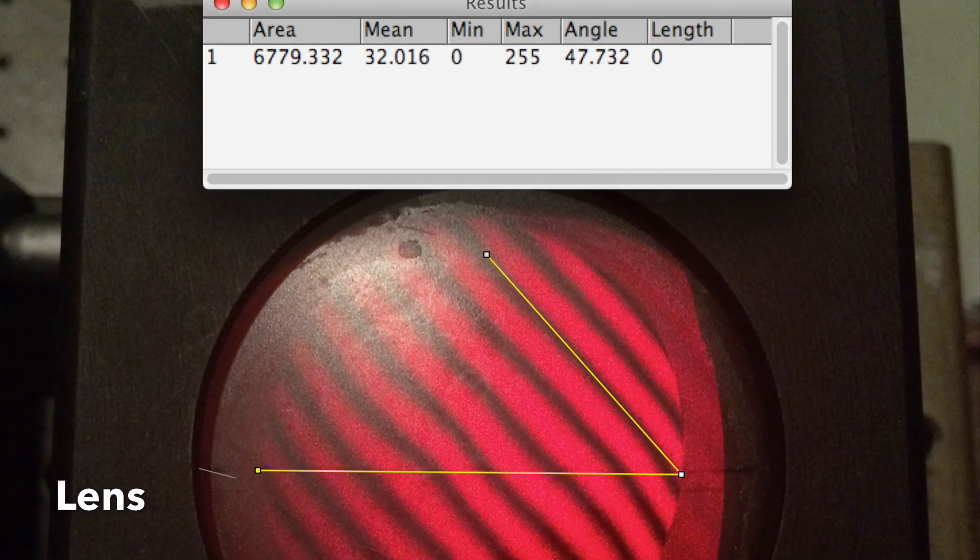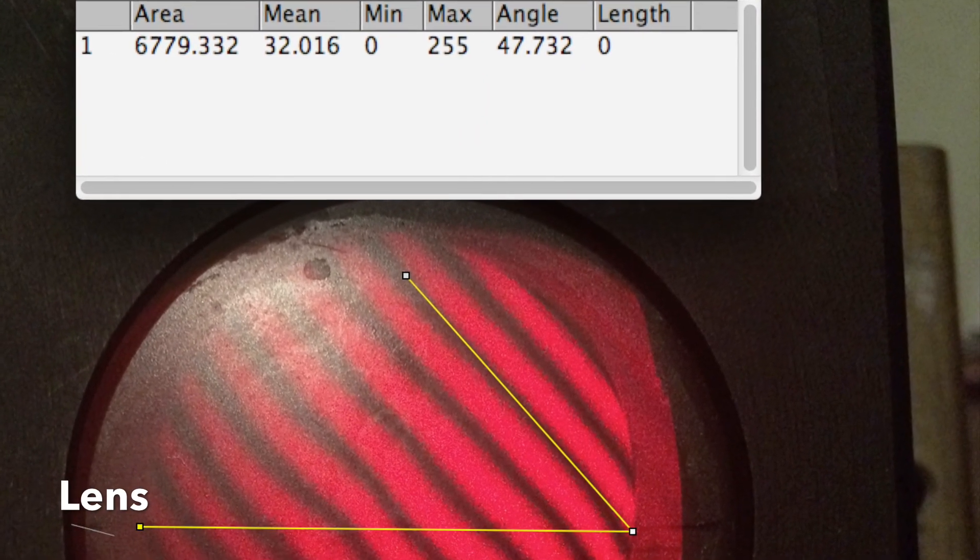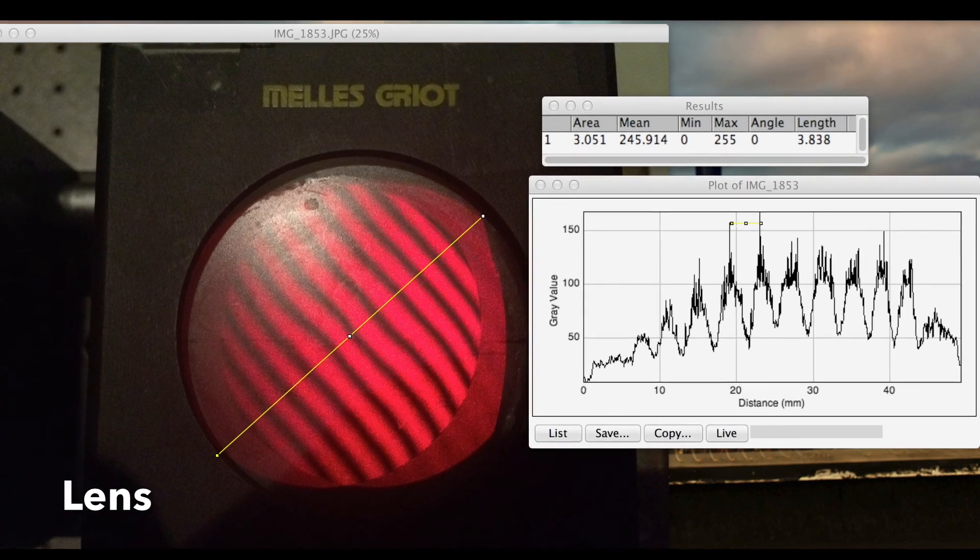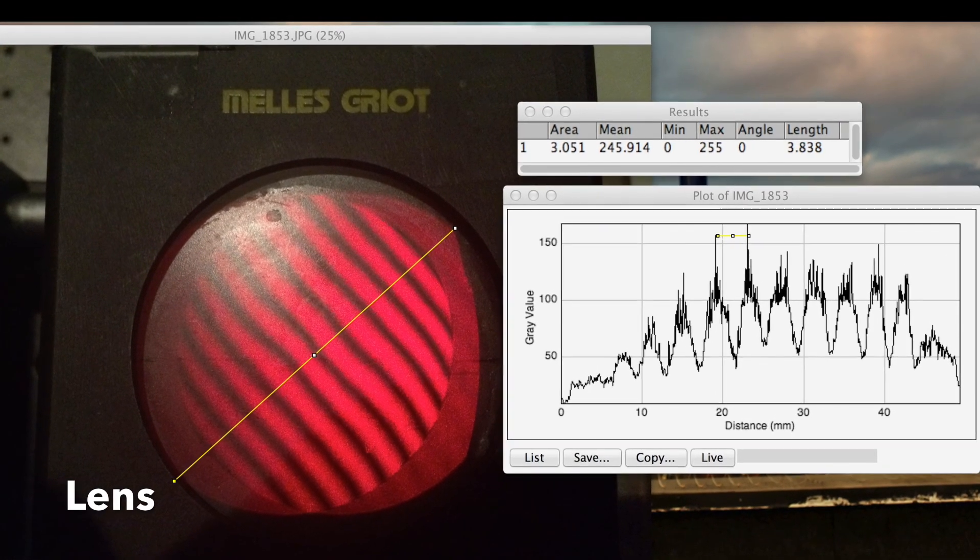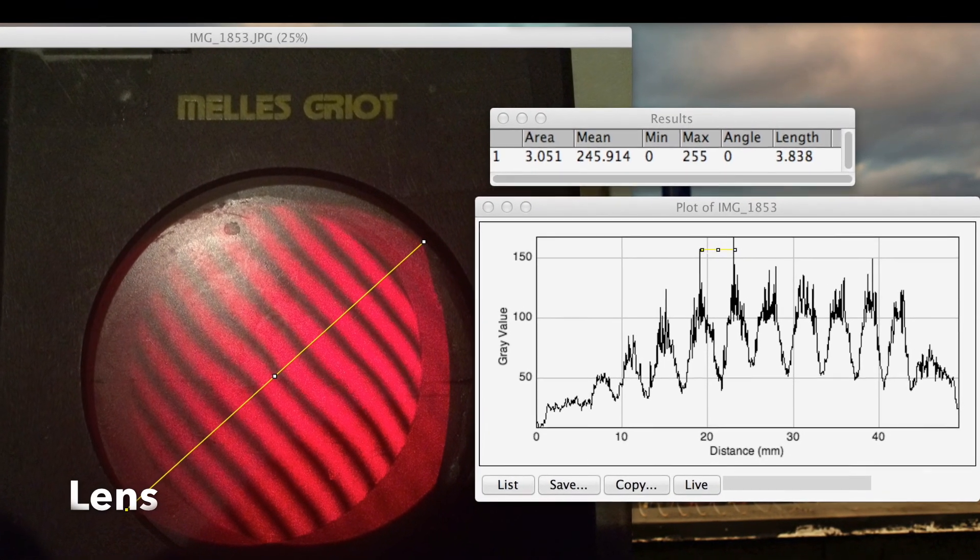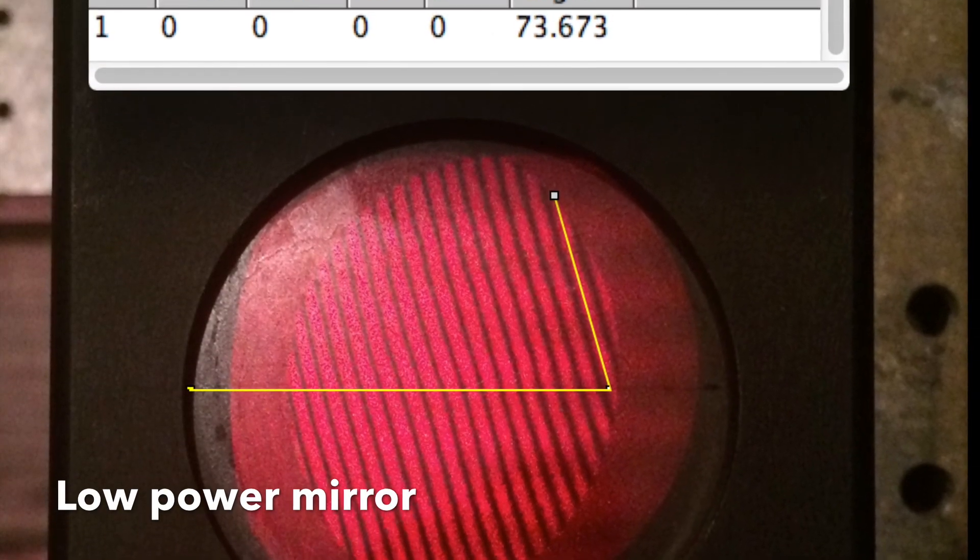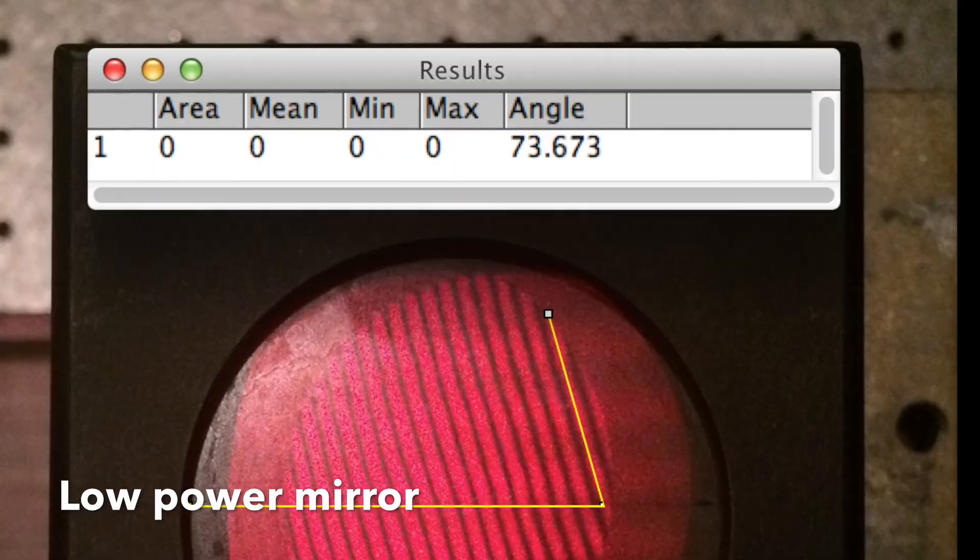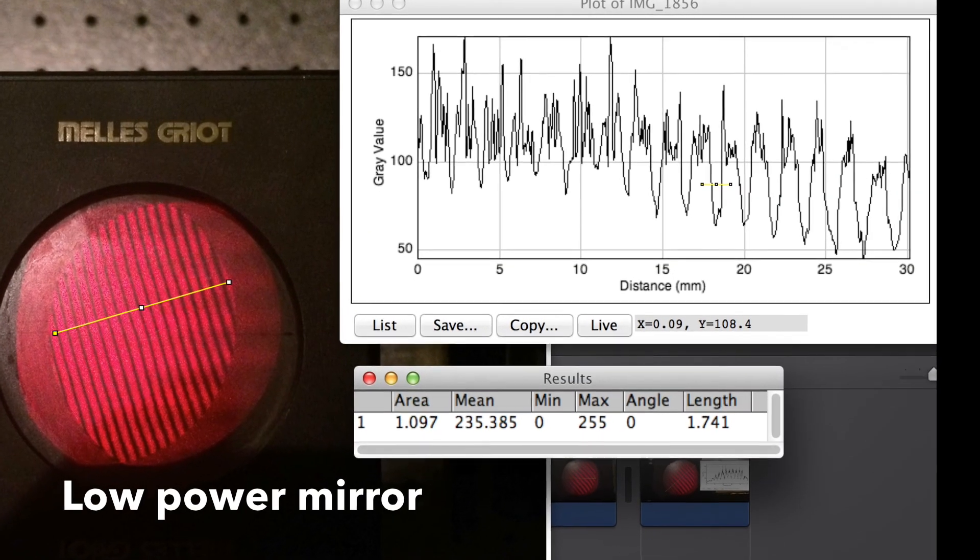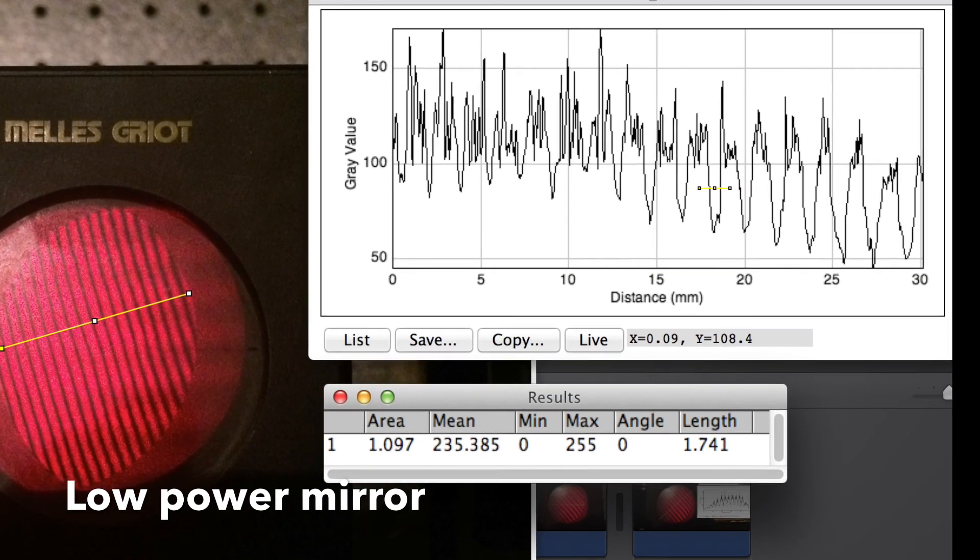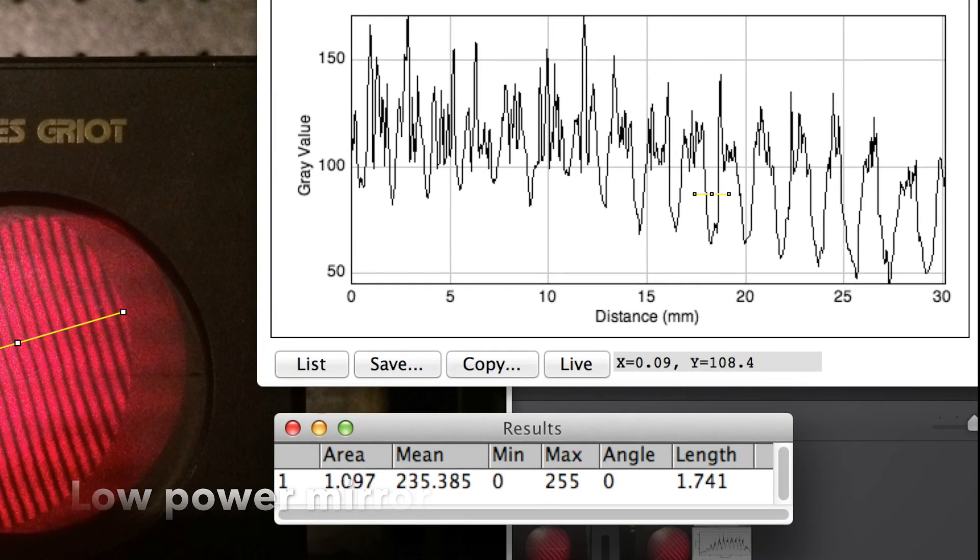Using image processing software, we got an angle of 47.7 degrees and a spacing of 3.8 millimeters. This gives us a radius of curvature of 61.4 meters and a focal length of 61.45 meters. For the low power lens, we got an angle of 73.6 degrees and a separation of 1.7 millimeters. This gives us a radius of curvature of 43.8 and a focal length of 21.79 meters.